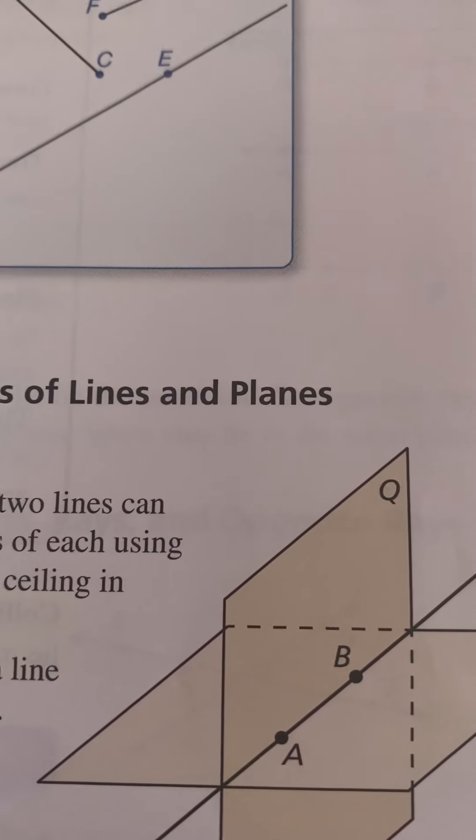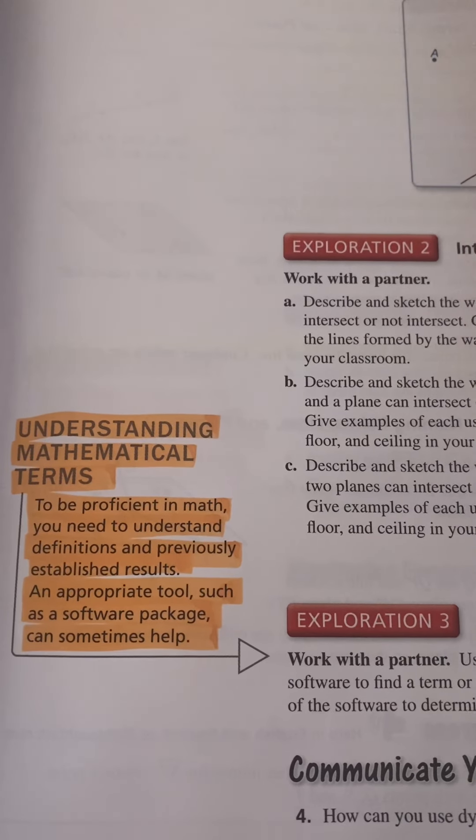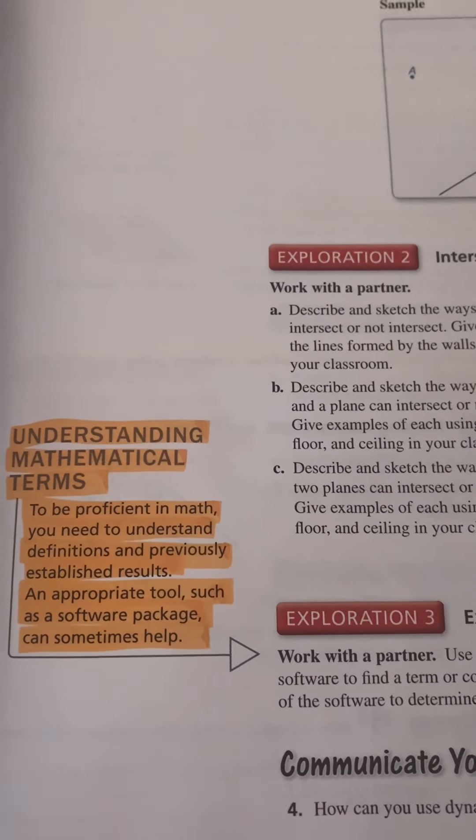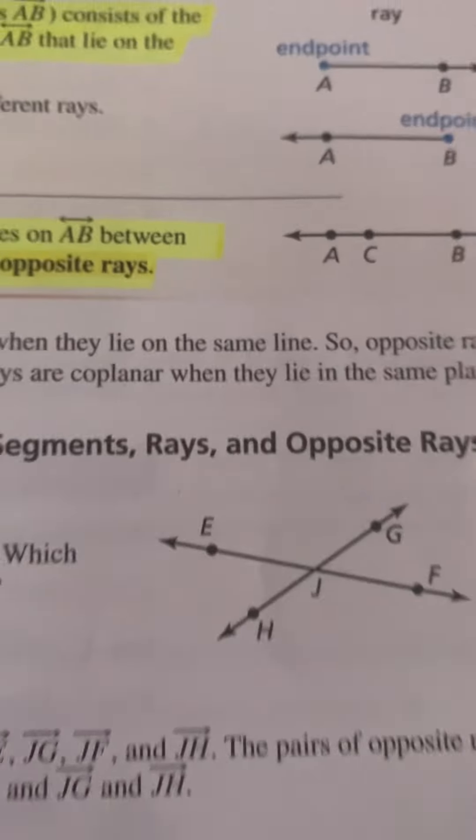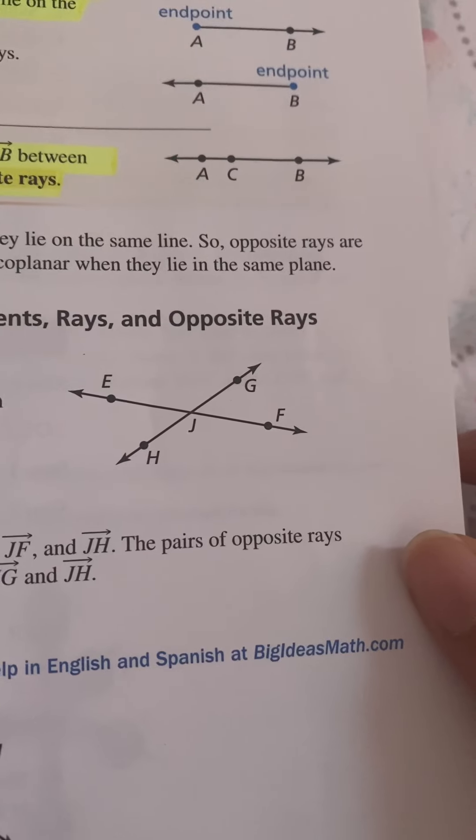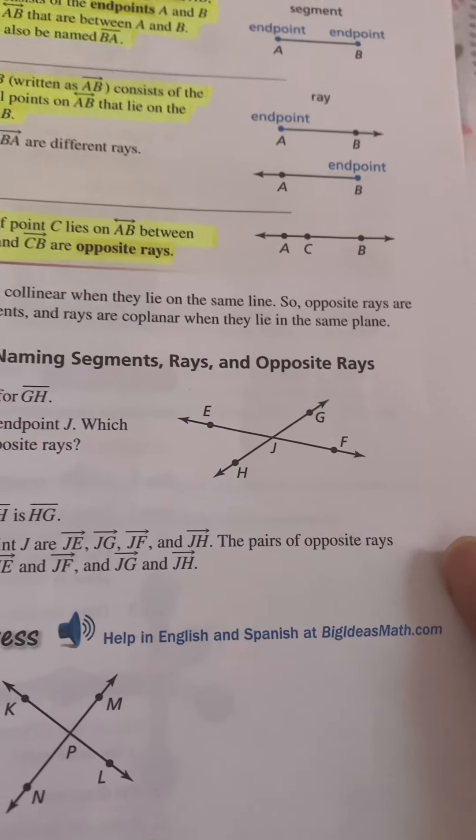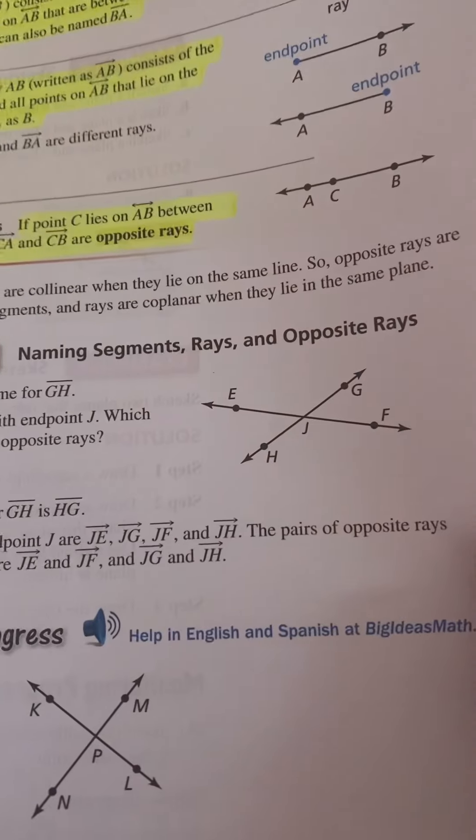1.1 Points, Lines, and Planes: Understanding Mathematical Terms. To be proficient in math, you need to understand definitions and previously established results. Appropriate tools such as a software package can sometimes help. Common error example: ray 2G and ray JF have a common endpoint, so they are not collinear; they are not opposite rays.